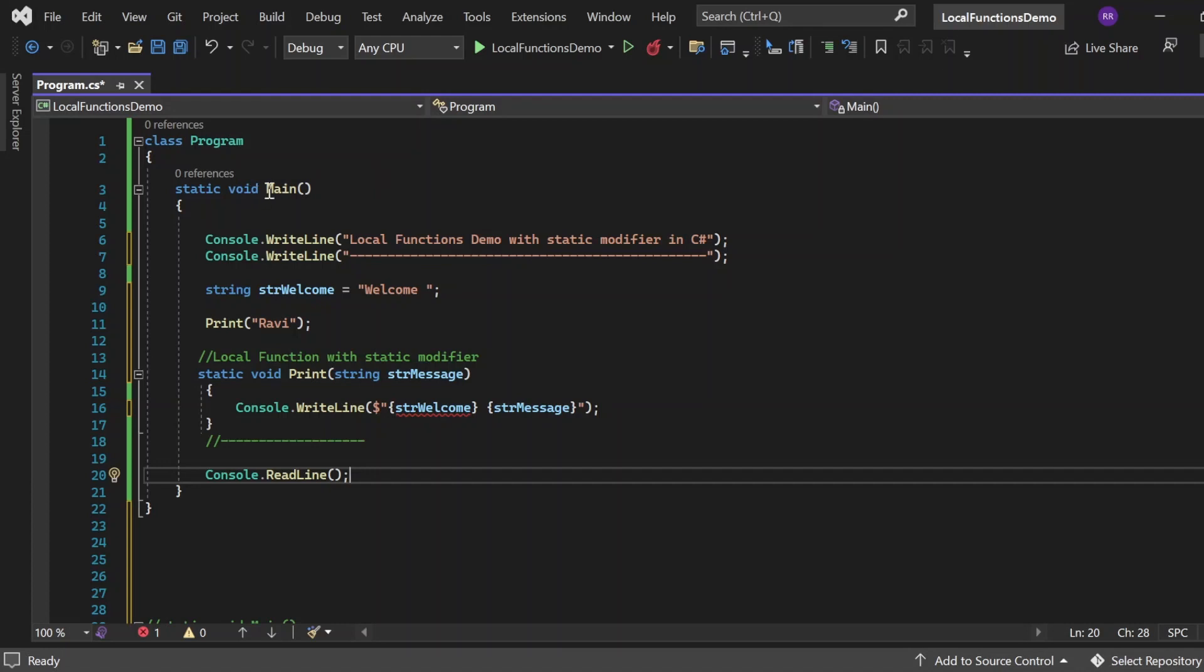In the console window I have written a Program class. Inside that there's a main method. Inside this main method I've written this local function with the static modifier. This is the Print function that accepts a string parameter str message, and the return type is void. Here I'm just writing one console.WriteLine statement.